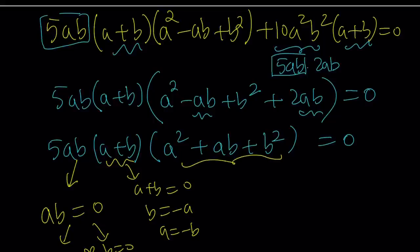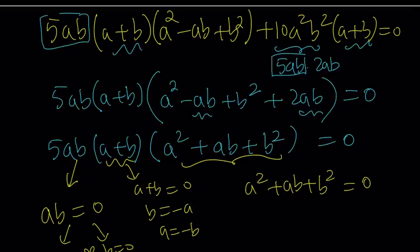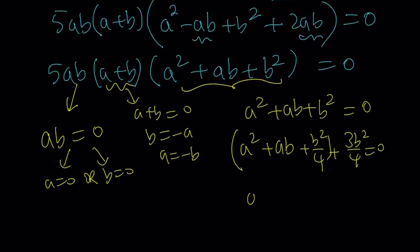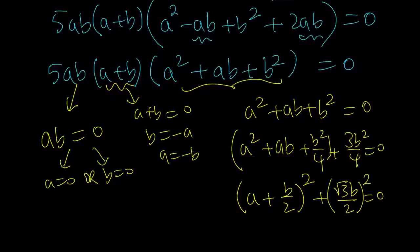The third one, however, is very interesting because if you set a squared plus ab plus b squared equal to zero, you're not going to get any real solutions. Is that true? Yes. But how do you explain that? Let's break it down. I can write this as a squared plus ab plus b squared over four plus three b squared over four equals zero. Why did I do that? Because I want to take the first three terms here. And that is a perfect square. It is a plus b over two quantity squared. If you know completing the square, you know what I'm talking about.